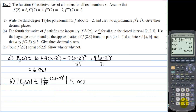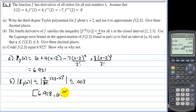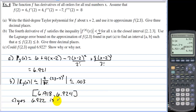Taking the estimate 6.921 and subtracting 0.003 gives 6.918, and adding 0.003 gives 6.924. So the interval is [6.918, 6.924]. Could f(2.3) equal 6.922? Yes, it could, because 6.922 is between 6.918 and 6.924.